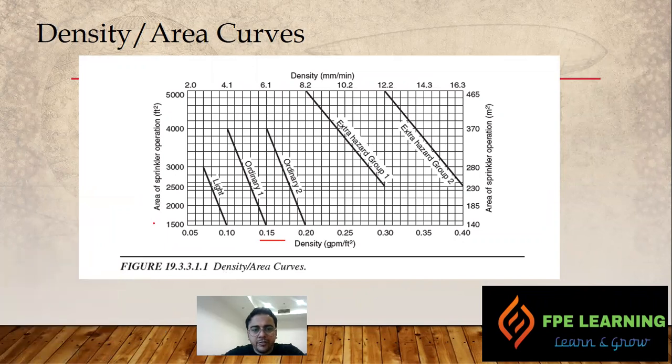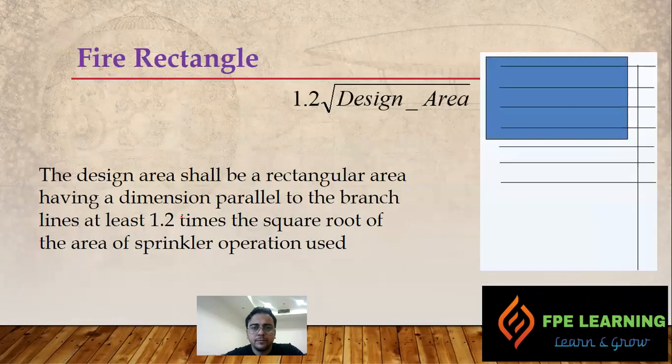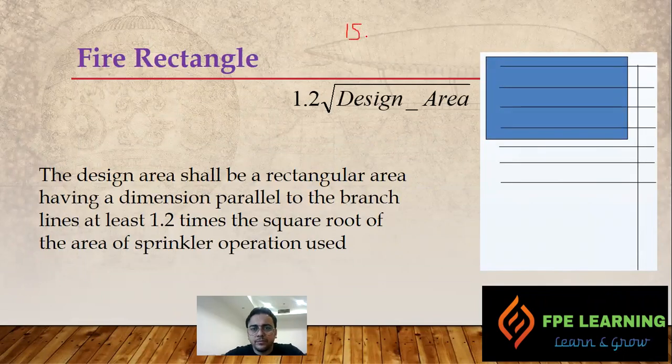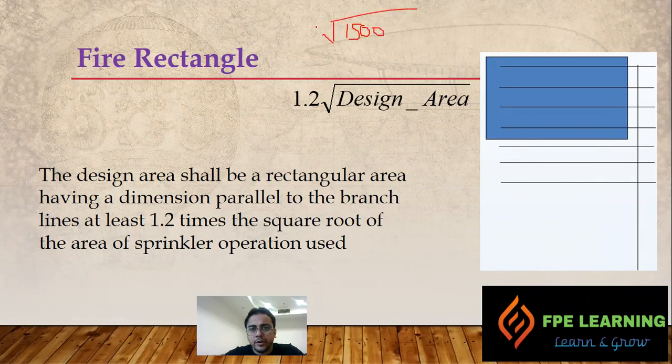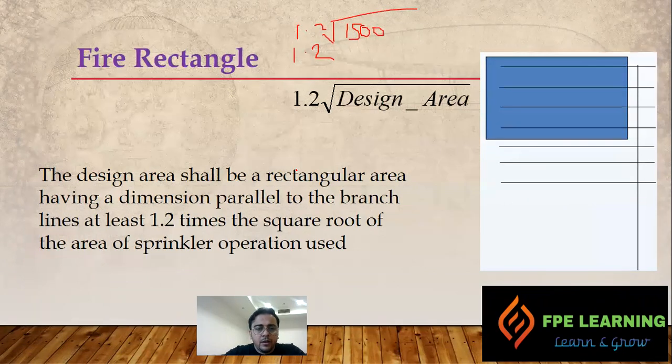For OH-1, we have 0.15 at 1500 square feet. So this is our 1500 for 1500 times 1.2.